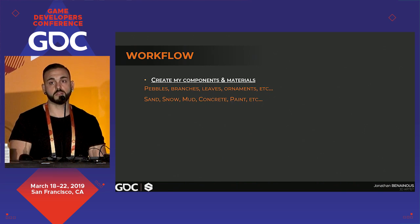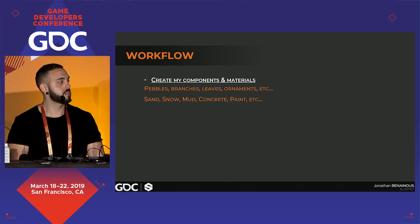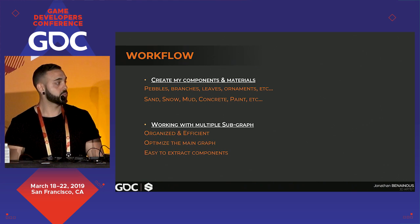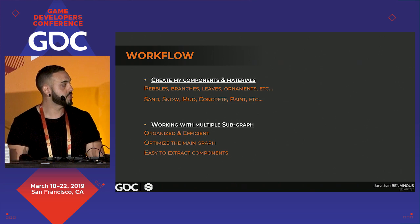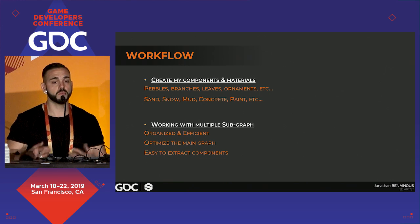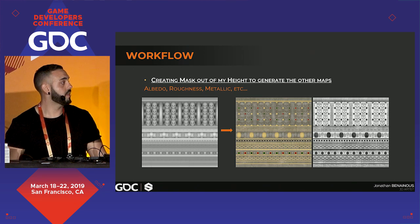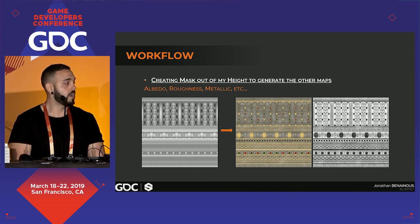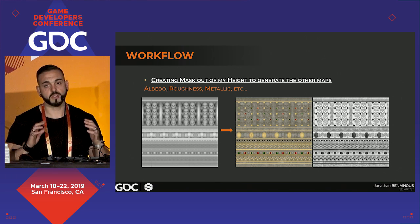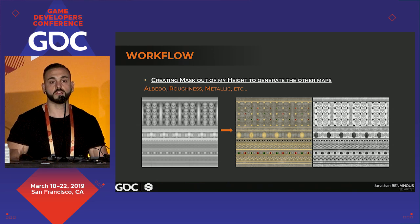I create my components and materials first. If I'm creating a forest ground, I'll tackle pebbles, branches, and leaves first. I work on the sand, snow, mud, concrete, paint, etc. I also work with multiple subgraphs to stay organized and efficient — it optimizes the main graph and makes it easy to extract components. For instance, if you created a muddy ground and a few months ago made a forest ground, you can grab subgraphs from that file to avoid starting from scratch. Finally, I create masks out of my height map to generate the other maps — the height is the base and foundation because it's used to extract the albedo, roughness, and metallic information.